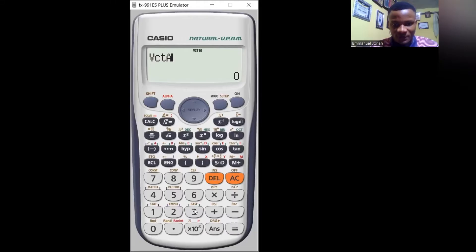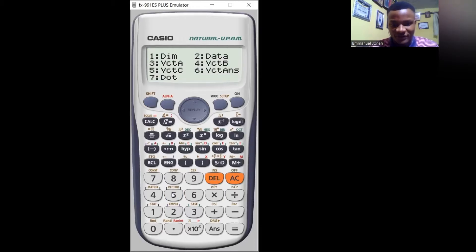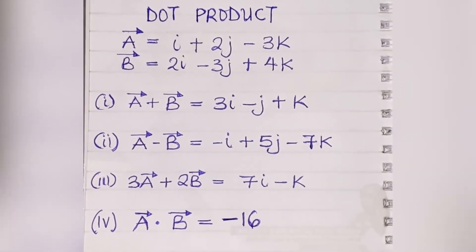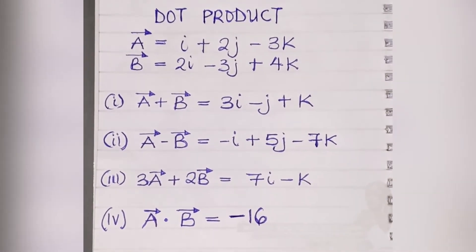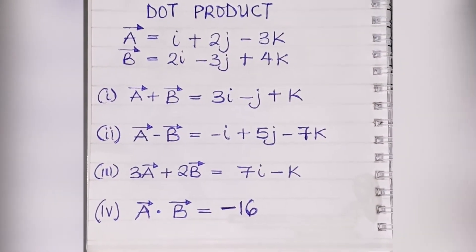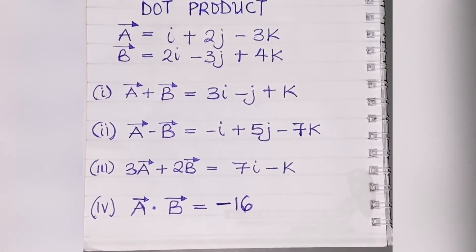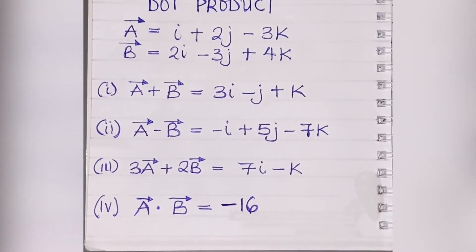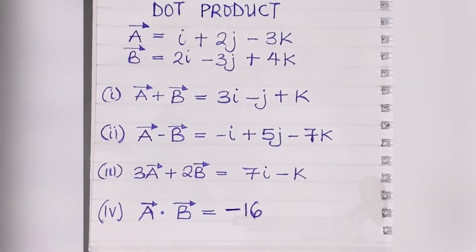In today's class we'll be looking at how to solve the dot product and cross product of vectors using the Casio fx-991 ES Plus calculator. Before we start solving, welcome to this class. I'll be showing how to do dot products with the fx-991 ES Plus calculator. We've already done the addition and subtraction of vectors, so for this class let's look at how to do dot product.